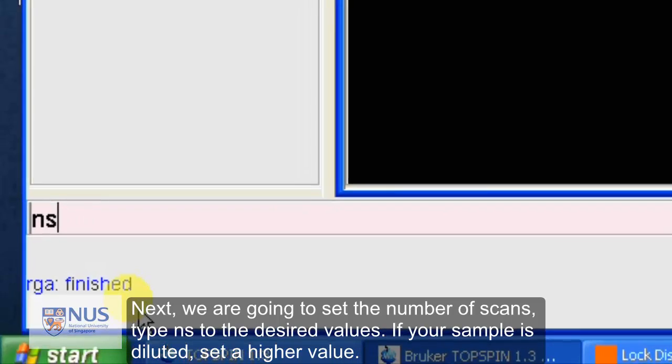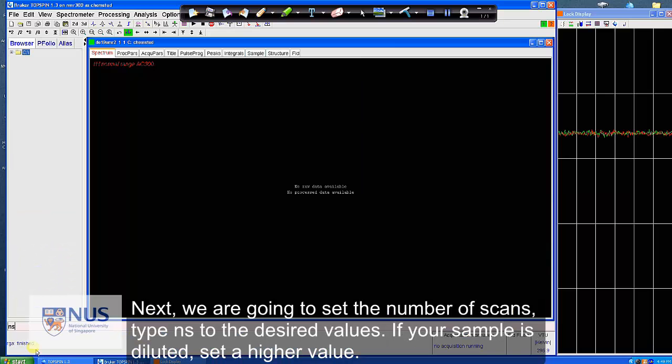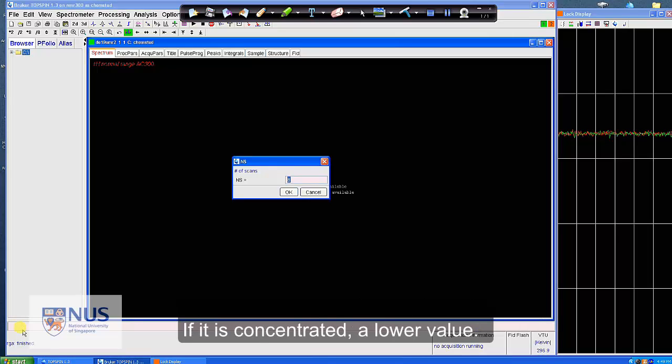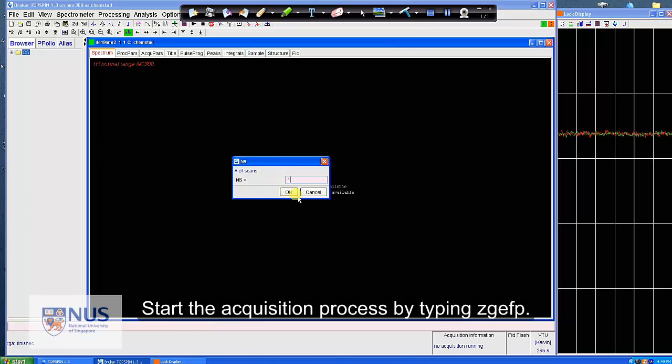Next, we are going to set the number of scans. Type NS to the desired values. If your sample is diluted, set a higher value. If it is concentrated, a lower value.